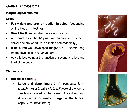An important feature useful for morphological identification is the presence or absence of teeth in the buccal capsule. Ancylostoma caninum and Ancylostoma tubiforme have three pairs of teeth in the buccal capsule, while Ancylostoma braziliense has two pairs. These teeth can be located at either the dorsal or ventral margin of the buccal capsule for Ancylostoma caninum and Ancylostoma braziliense, but for Ancylostoma tubiforme the teeth are located only at the ventral margin of the buccal capsule.